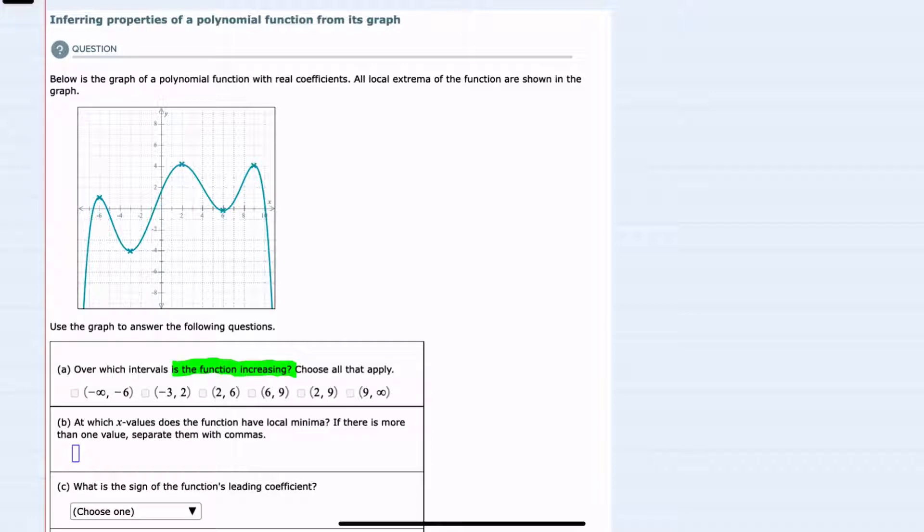So if we were to move along the graph from left to right we would see that the graph is increasing during this first section and then again increasing here and also increasing here from left to right. So if we're looking for the x-values over which the function is increasing, that would be everything from negative infinity up to this point which has an x-value of negative 6.